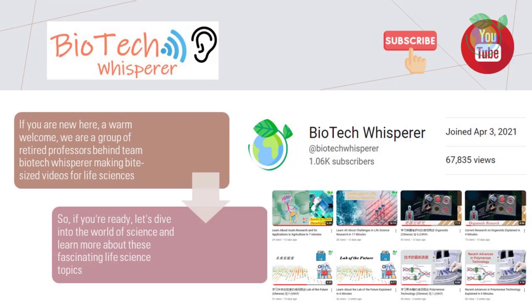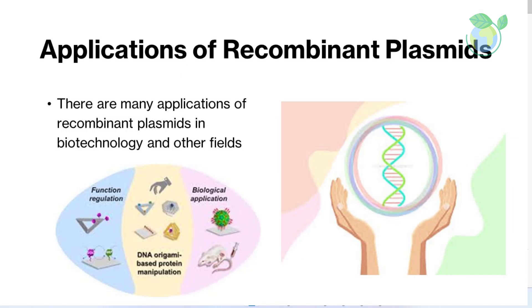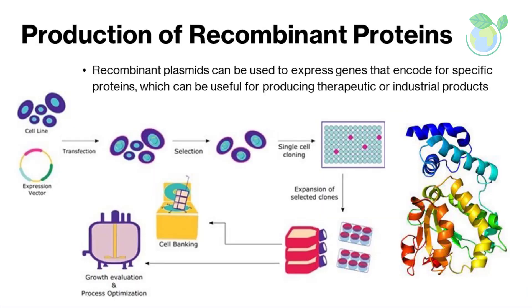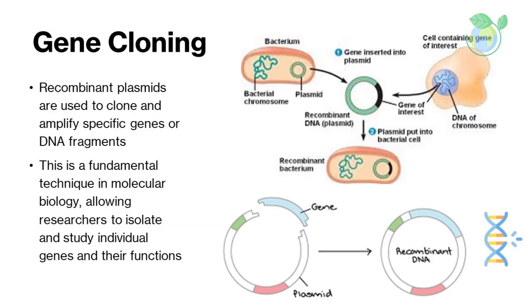There are many applications of recombinant plasmids in biotechnology and other fields. One common use is the production of recombinant proteins — recombinant plasmids can be used to express genes that encode for specific proteins, which can be useful for producing therapeutic or industrial products. Another key use is gene cloning: recombinant plasmids are used to clone and amplify specific genes or DNA fragments, allowing researchers to isolate and study individual genes and their functions.